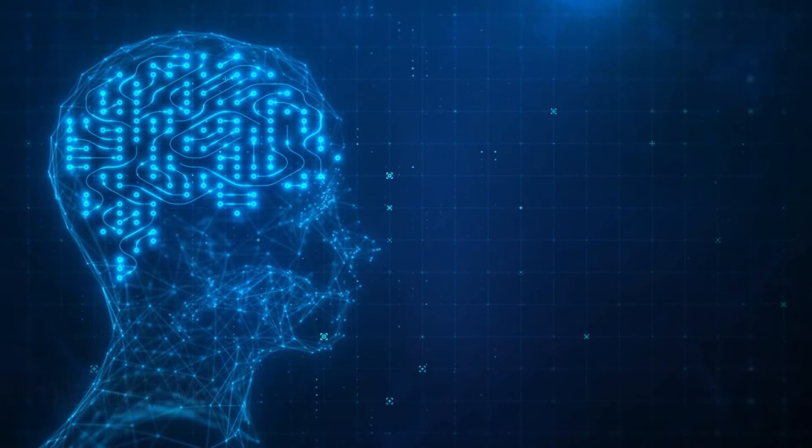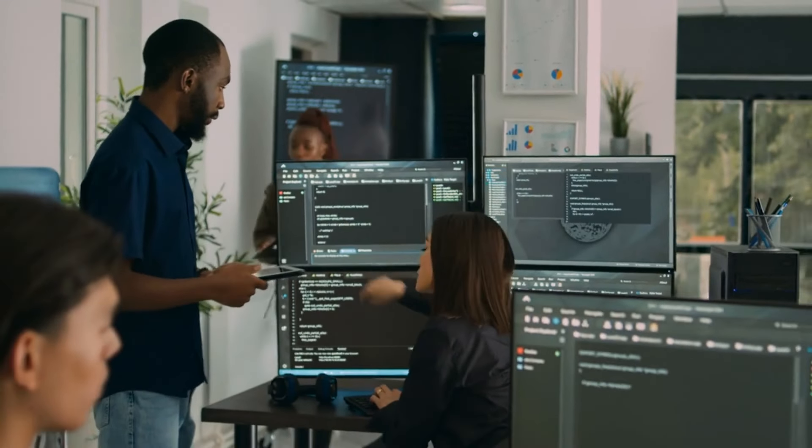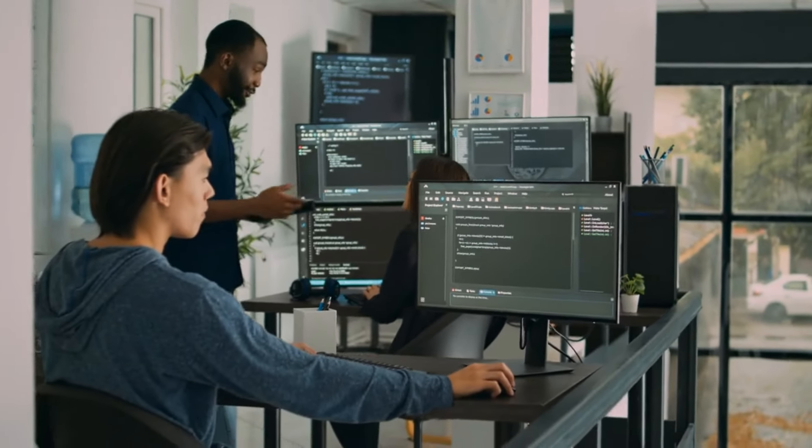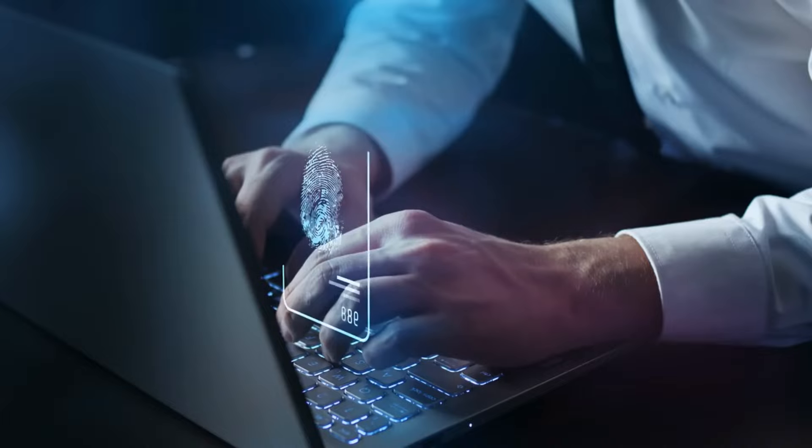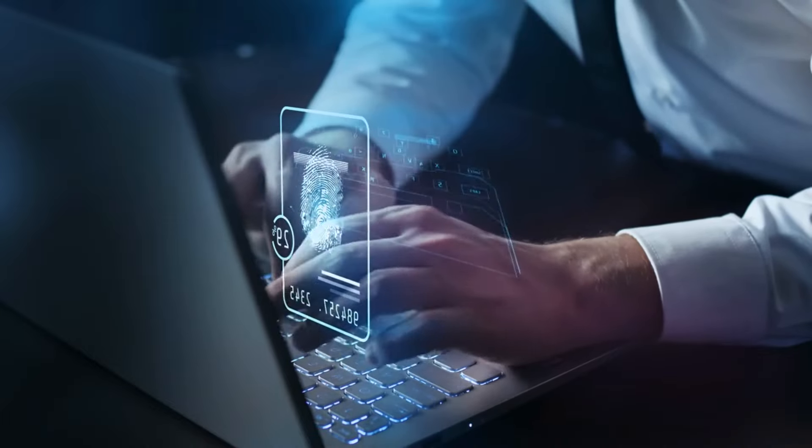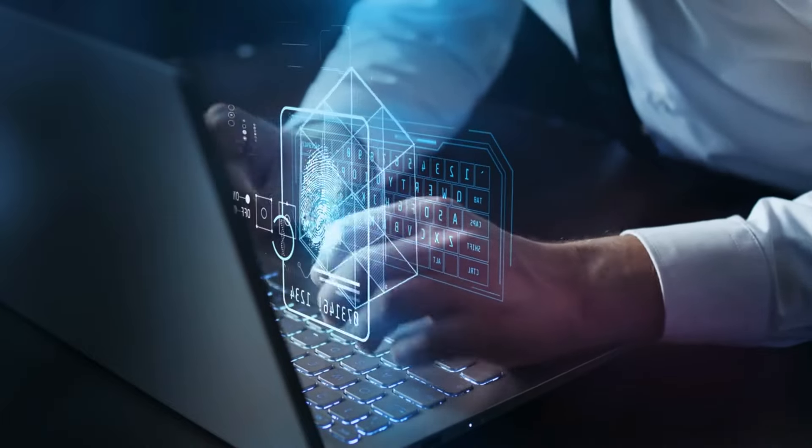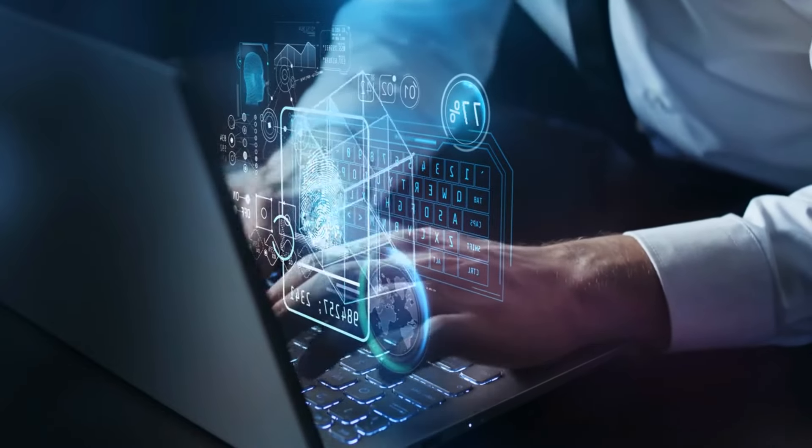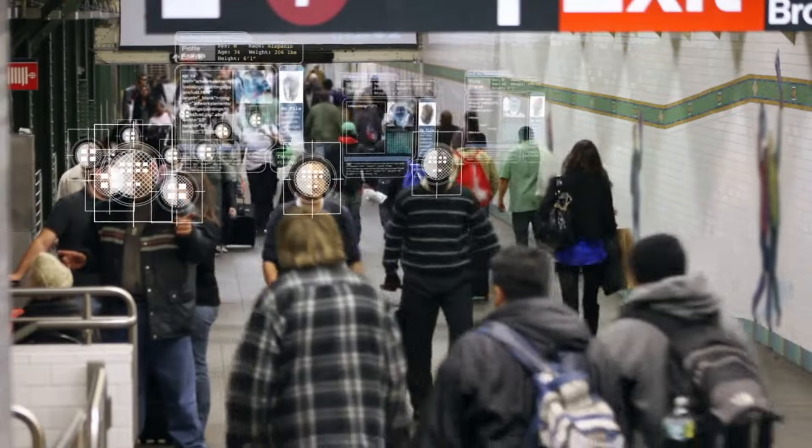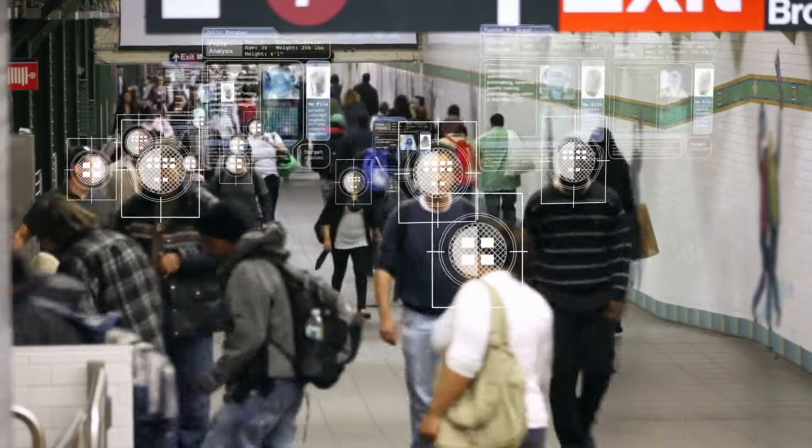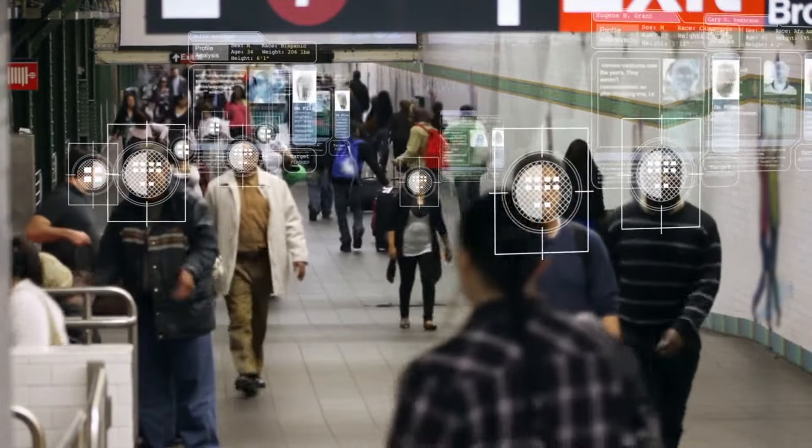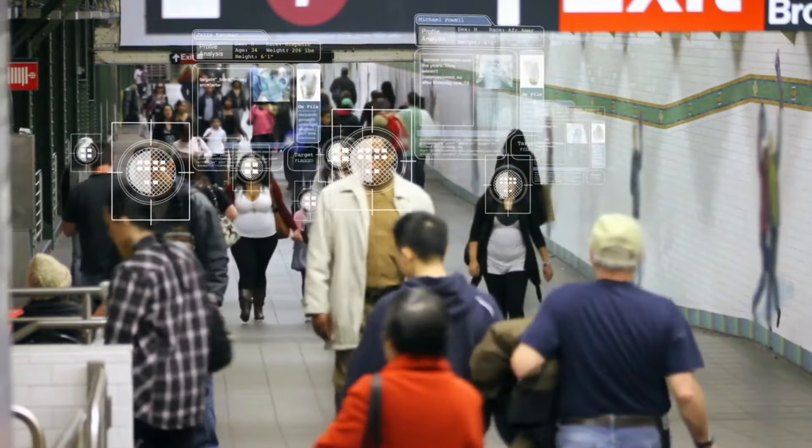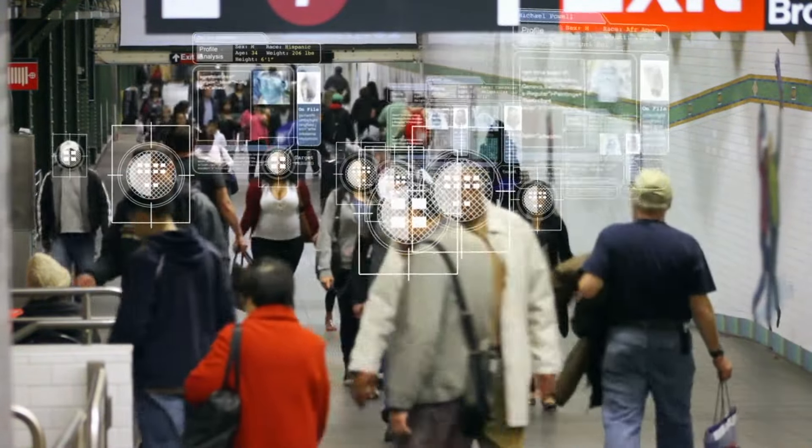One, ethical AI. As AI technologies continue to permeate society, it is vital to approach their development and deployment with a strong ethical framework. Understanding the ethical implications of AI, such as bias, privacy concerns, and accountability, is crucial for responsible AI implementation. By familiarizing yourself with ethical AI principles and frameworks, you can navigate the complex landscape of AI ethics and ensure that your AI solutions align with societal values.